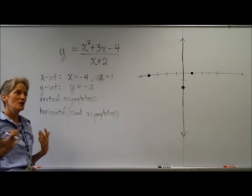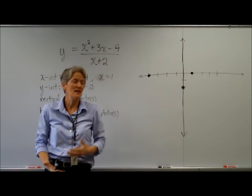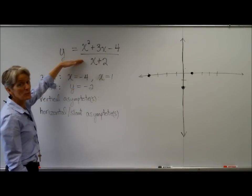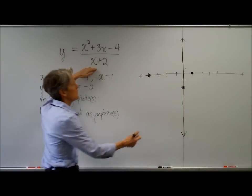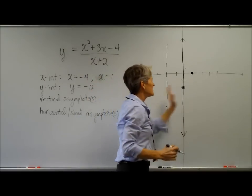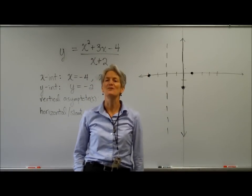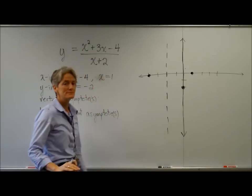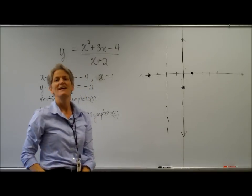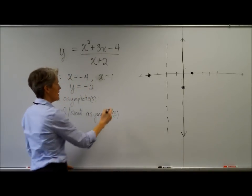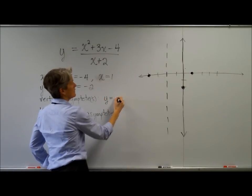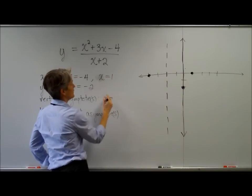All right. Vertical asymptotes. We're looking to see where this function does not exist. Yeah. Where is it undefined? It's kind of like when we talked about the domain. Where is this undefined? Sure, it's undefined when the denominator equals zero. Negative two. Boom. This function does not exist at x equals negative two. Hey, does this function exist for every other x value? It does. It does. So it must exist on the right side of that vertical asymptote, and on the left side, but not on it.